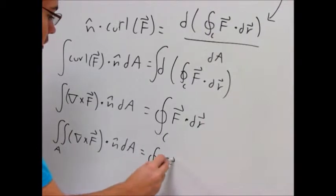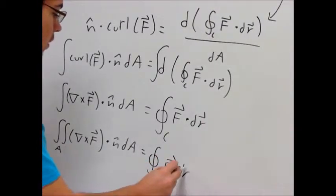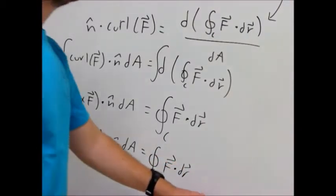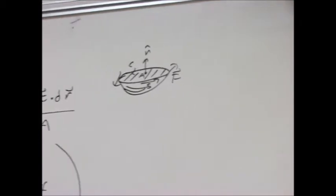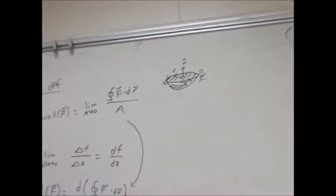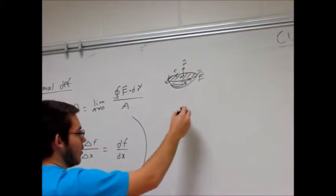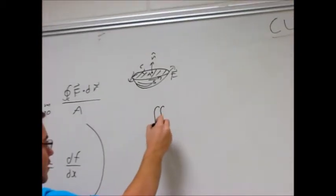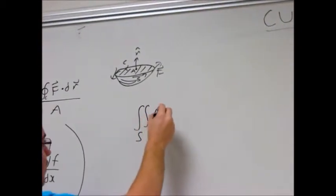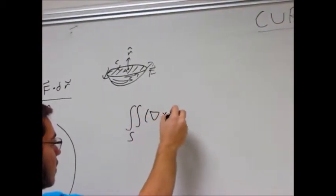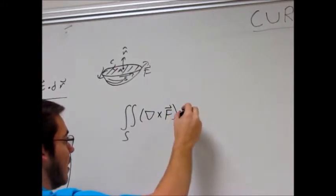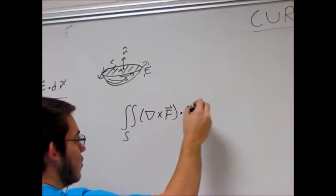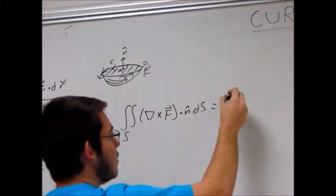Curl f dot n dA, and you can see this is either a surface integral where A is a surface. Where A actually can be any surface. It doesn't have to be a, it could be a surface like this. So the full form of the theorem is, let me write it over here. The surface integral of the curl dot n dS or dot d vector S.